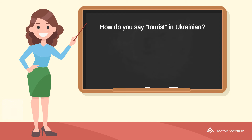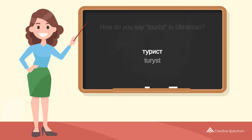How do you say «tourist» in Ukrainian? «Tourist». Try to pronounce the word. «Tourist». Repeat the word. «Tourist». You've learned how to say «tourist» in Ukrainian.